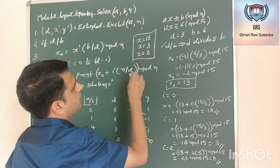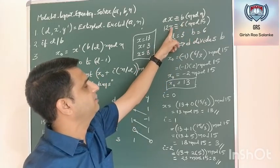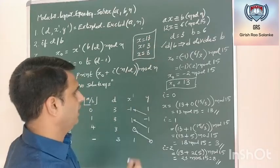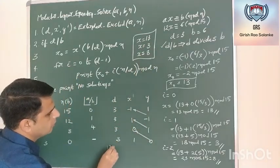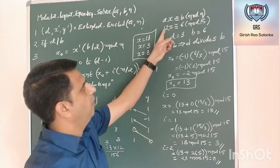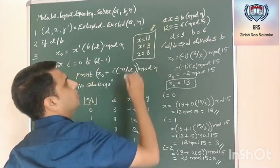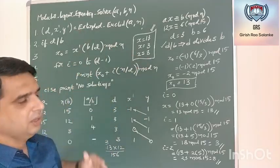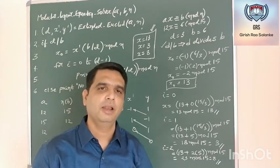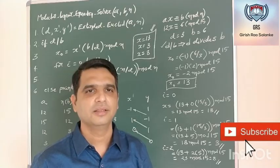We can verify: x equal to 3 — 12 into 3 is 36, 36 mod 15 is 6. x equal to 8 — 12 times 8 is 96, 96 mod 15 gives remainder 6. x equal to 13 — 12 into 13 is 156, 156 mod 15 gives remainder 6. This is how we solve the modular linear equation with the help of the extended Euclid's algorithm. Note that this is very helpful whenever we try to generate the decryption key in case of the RSA algorithm. Hope this was clear. Thank you.